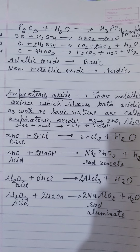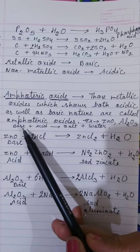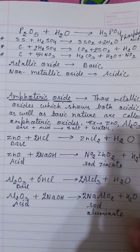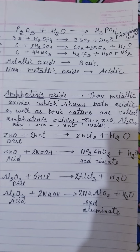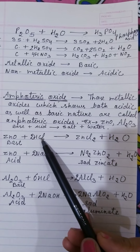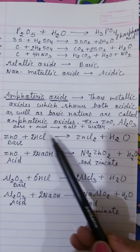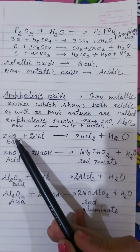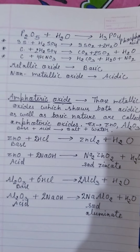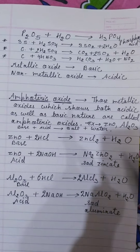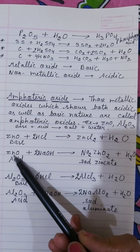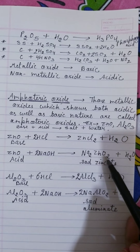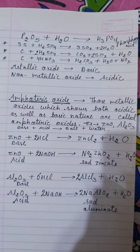As we know, when an acid reacts with a base it forms salt and water — this is the concept of a neutralization reaction. When ZnO reacts with acid HCl it forms zinc chloride and water, so ZnO is acting as a base. When ZnO reacts with a base (NaOH), it acts as an acid and forms sodium zincate (Na₂ZnO₂) plus water.